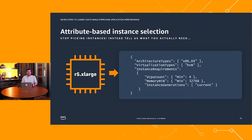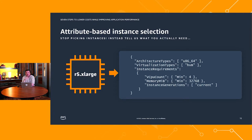Once you've answered those questions, we can automate the process of finding the best instance with attribute-based instance selection. You just specify your minimum CPU and minimum memory, and we go out and find the instance that meets or exceeds those specifications at the absolute cheapest price. In this example, we're saying we need a minimum of four vCPUs and just over 32,000 megabytes of memory, and it automatically finds the instance type that best matches that.